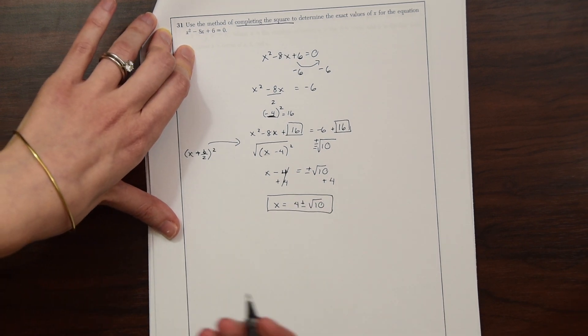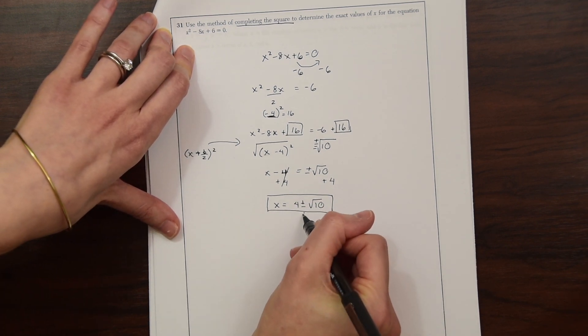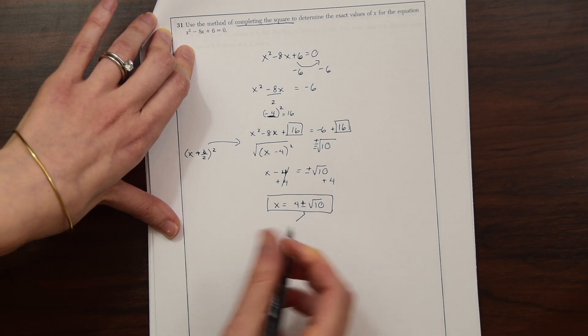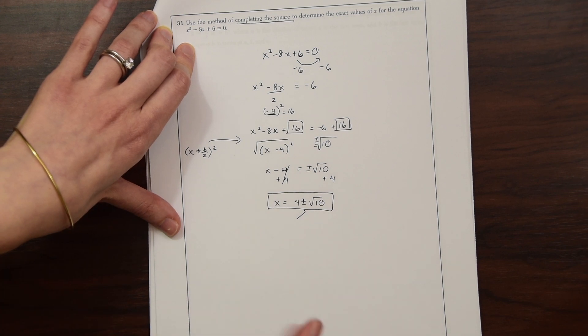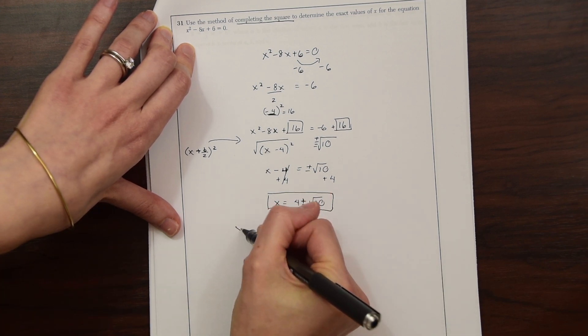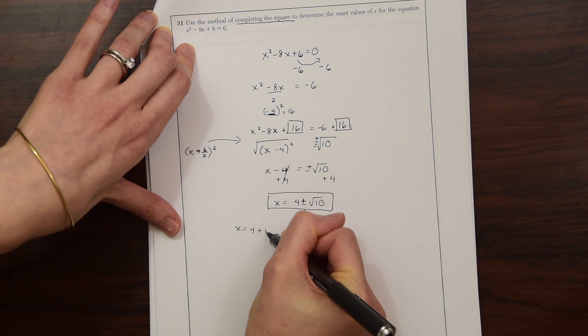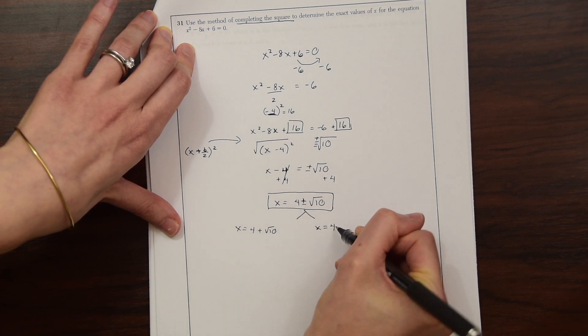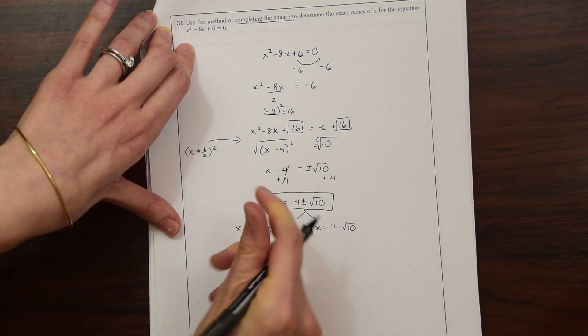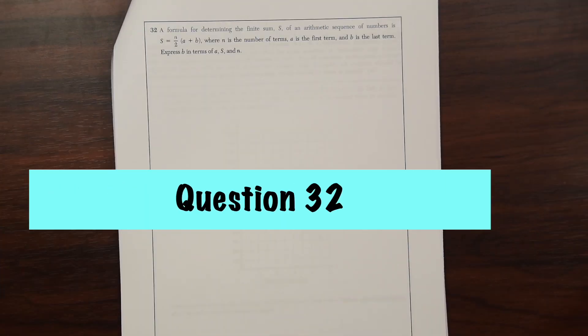Another way you could have written this is you could just leave it like that, and that would be okay. But just to let you know what that plus or minus represents, this actually creates two equations, two solutions. So we're saying that x is equal to 4 plus radical 10, and we're saying that x is equal to 4 minus radical 10. So that's what that plus or minus represents.